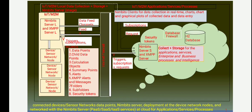Data is collected from IoT or M2M devices. Nimbits collects timely data or geostamped data and operates with two server services: the Nimbits server and XMPP server. The remaining nodes are clients collecting data from various sensors. That data is represented as data points, child data points, calculation objects, summary points, alerts, generation messages, stored in folders and subfolders with security tokens.